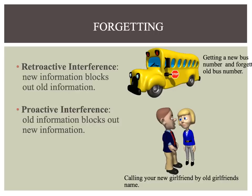Proactive interference is when old information blocks out new information. For example, you might talk to your girlfriend and accidentally call her by your previous girlfriend's name. Or if your girlfriend gets a new phone number, you might forget it because you've already memorized her old number. You guys don't have to memorize phone numbers anymore since you have cell phones, but I still have my girlfriend's number memorized from middle school.